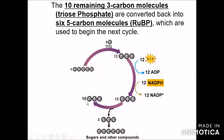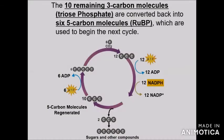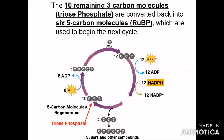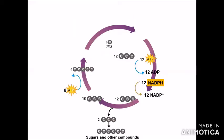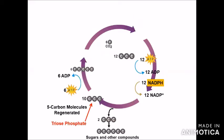The 10 remaining triose phosphate molecules are converted back into six five-carbon molecules of ribulose bisphosphate, which are used to begin the next cycle. ATP is used for this reaction — six molecules of ATP. Five-carbon molecules are regenerated from triose phosphate. This completes the cycle: triose phosphate → ribulose bisphosphate.